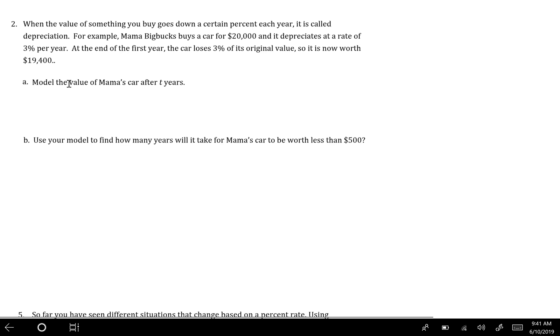So this time when we take the twenty thousand and multiply it by 0.03, it's still six hundred, but we're doing twenty thousand minus six hundred instead of plus six hundred to get the nineteen thousand four hundred that the value of the truck is going to be at the end of the year.